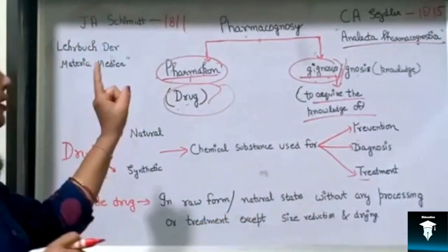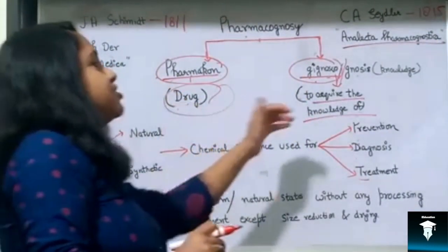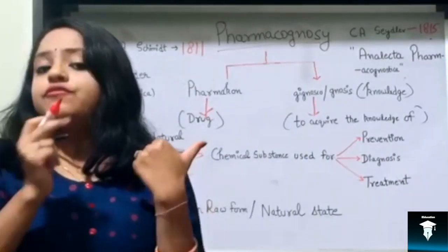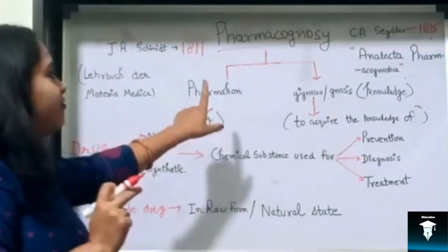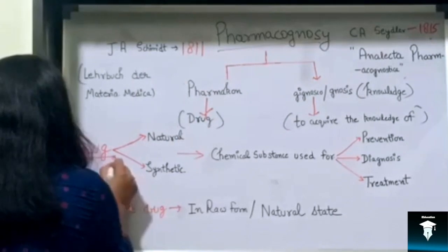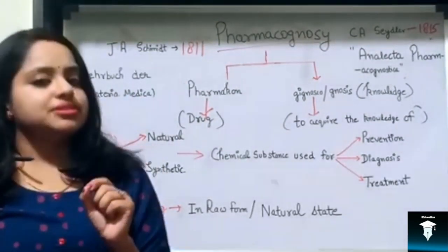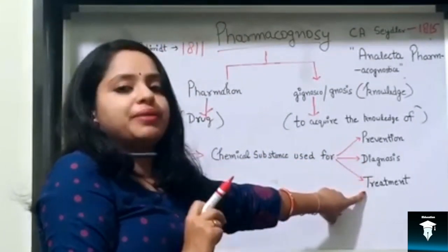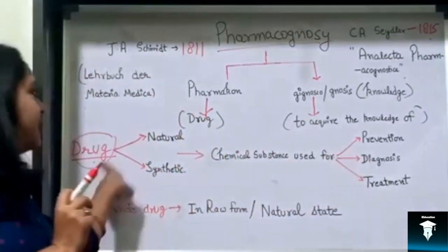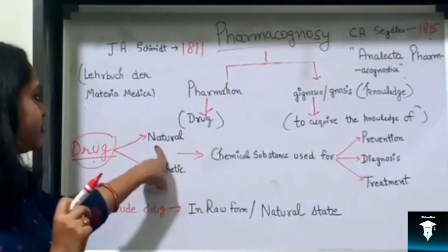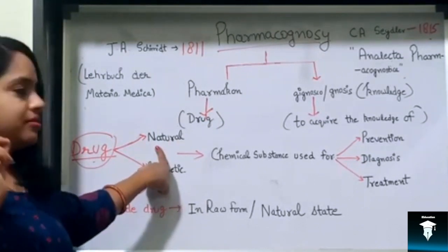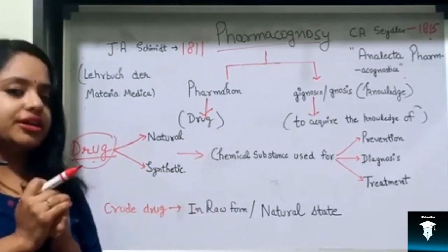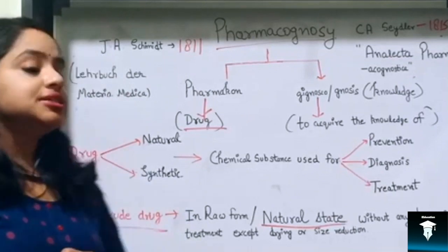As I told you, through this subject we will acquire the knowledge of drugs. Now the question arises: what is a drug and which types of drugs are studied in Pharmacognosy? A drug is any chemical substance that is used for prevention, diagnosis, or treatment of disease. This drug may be natural or synthetic.